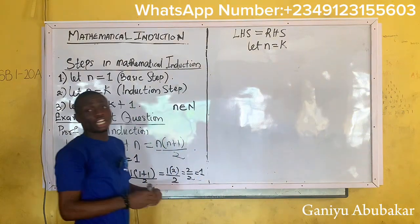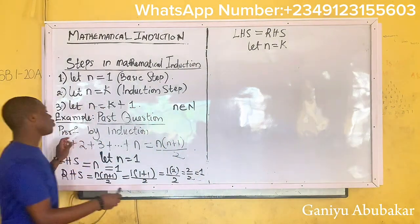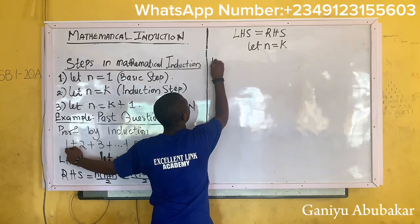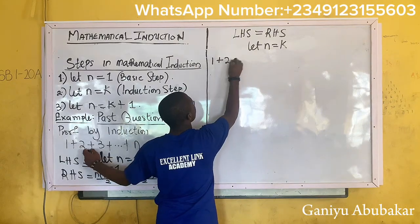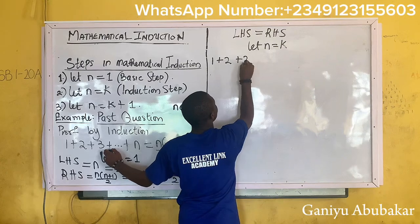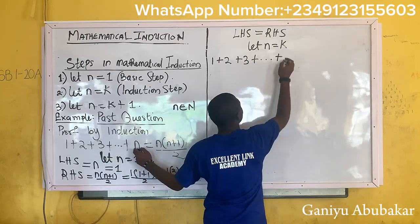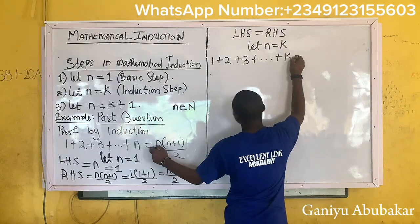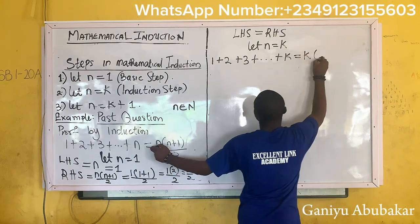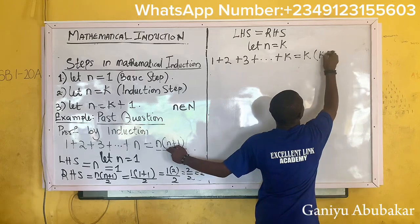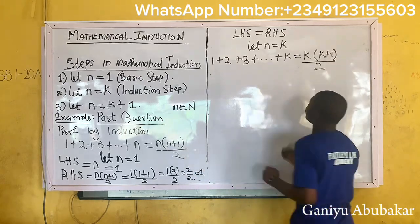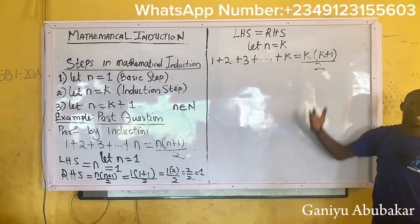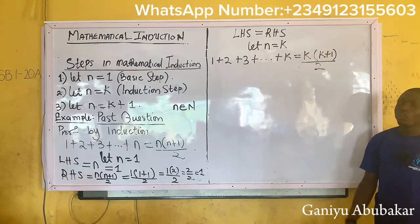Now let n equal k. That becomes your induction rule. So go back to your question — I have one plus two plus three plus dot dot dot plus n, where n is k. That becomes k equal to k into k plus one over two. This becomes your induction step — you are done.